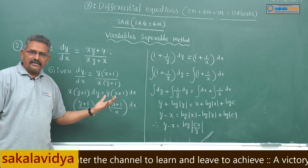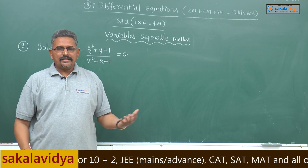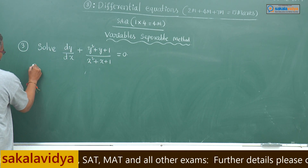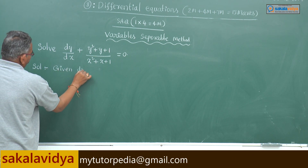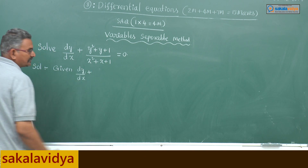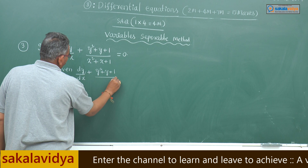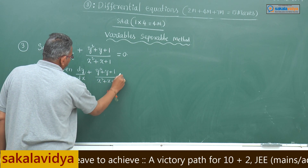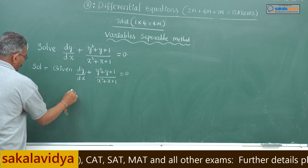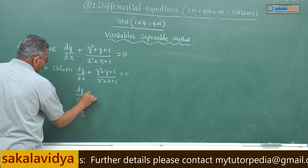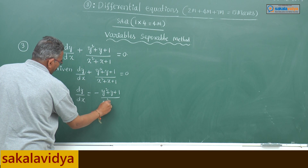Have you understood? I think you might have understood the problem. Let us move to one more problem. Given: dy/dx plus (y² + y + 1)/(x² + x + 1) equals 0. Bring the fraction term to the other side, so dy/dx equals minus (y² + y + 1)/(x² + x + 1).